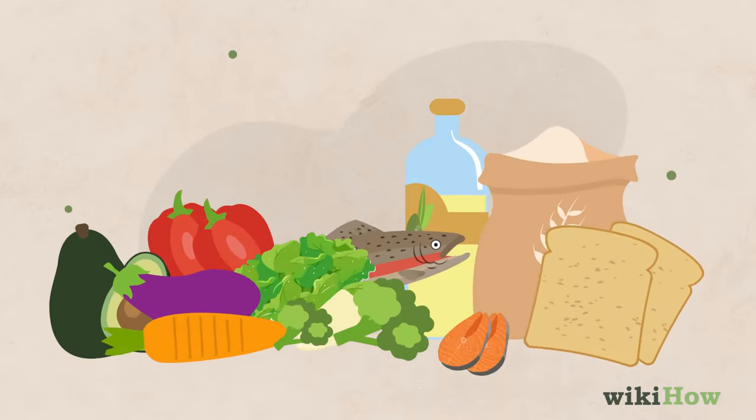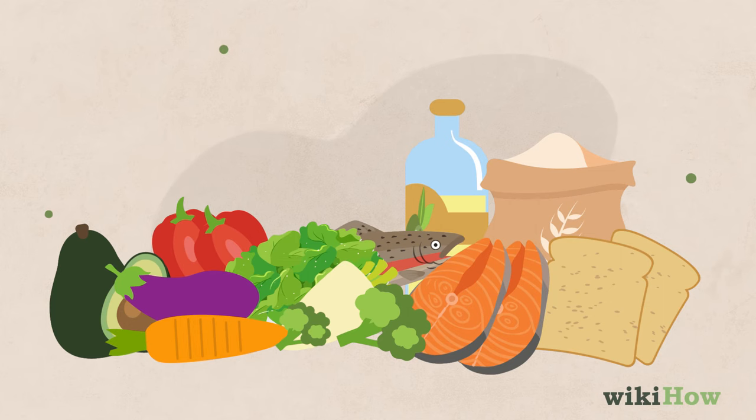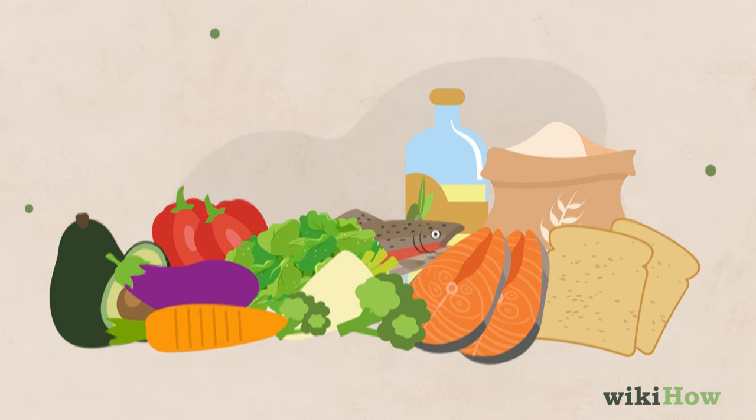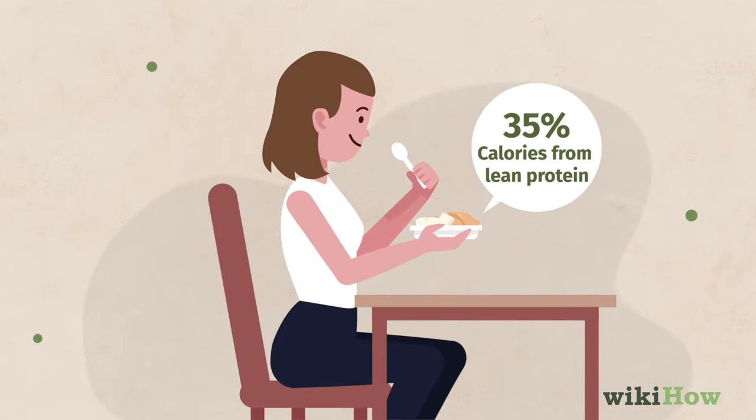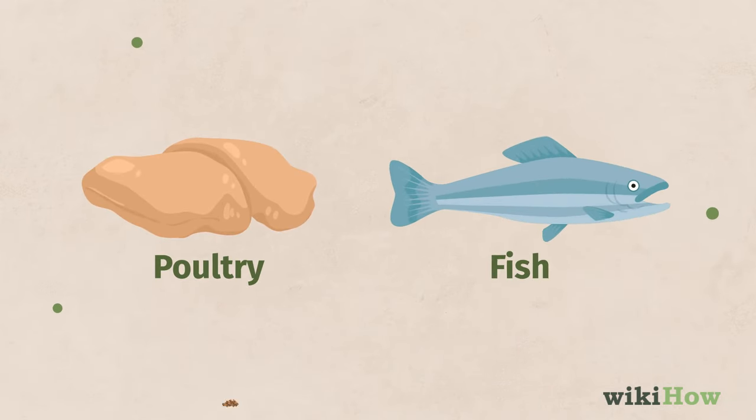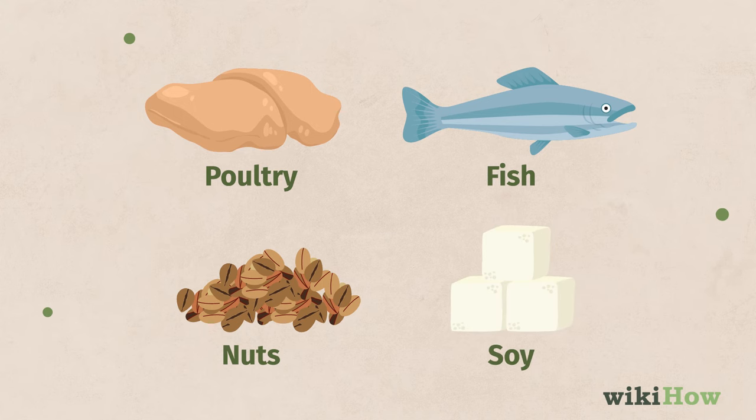Another part of getting a bigger butt naturally is eating a balanced diet that promotes muscle growth. Aim to get 35% of your calories from lean protein like poultry, fish, nuts, and soy since protein is critical for growing bigger muscles.